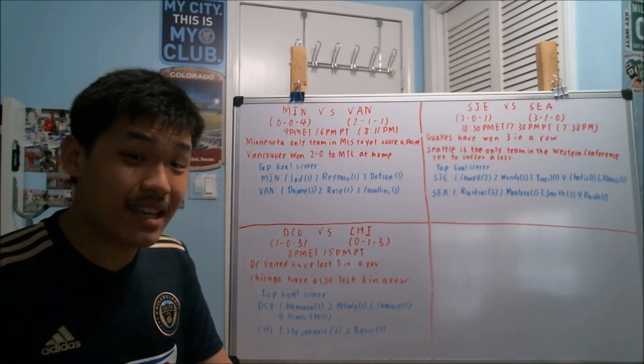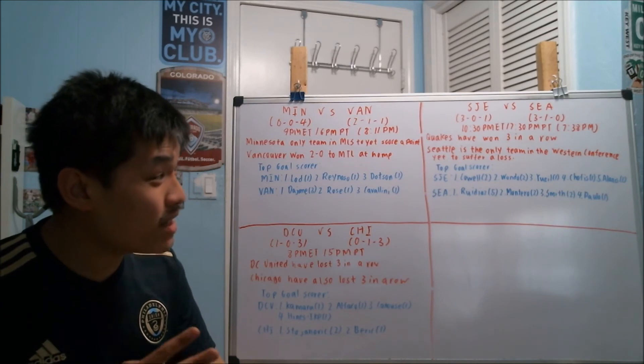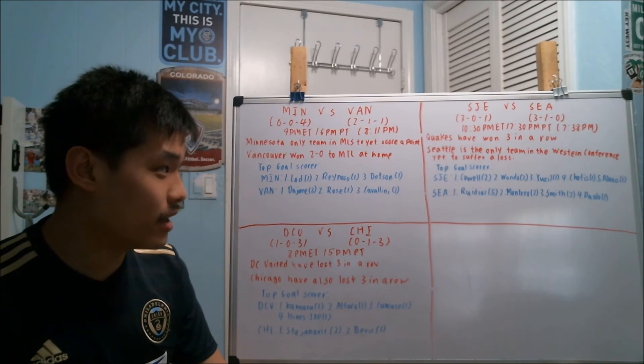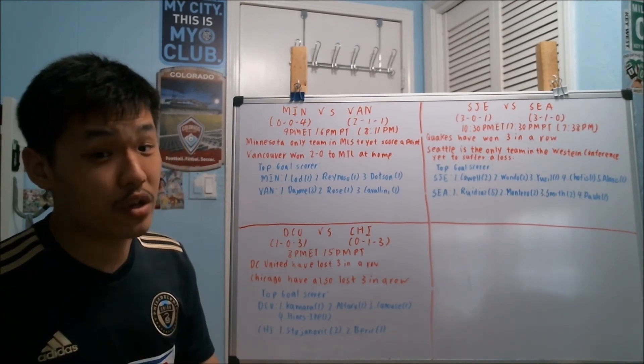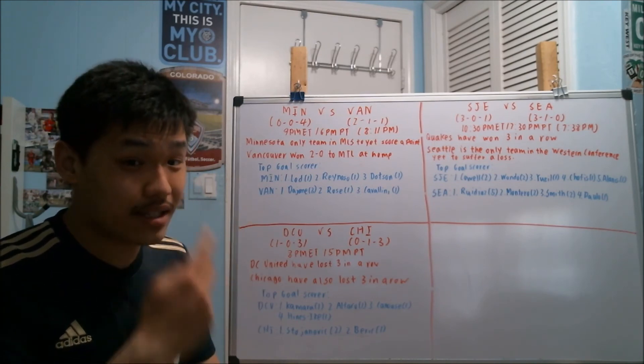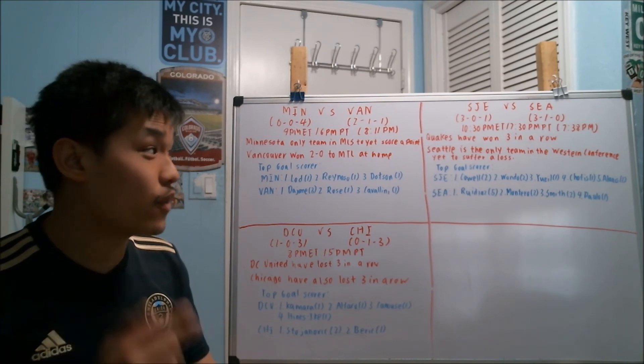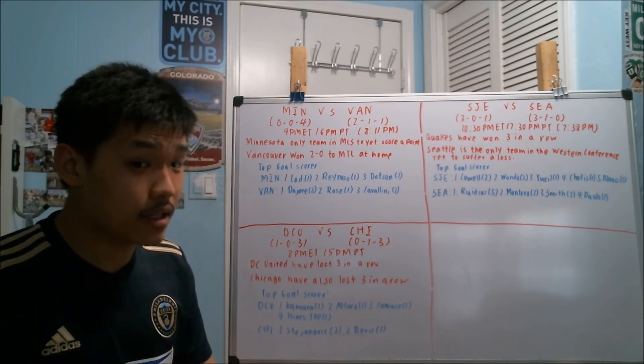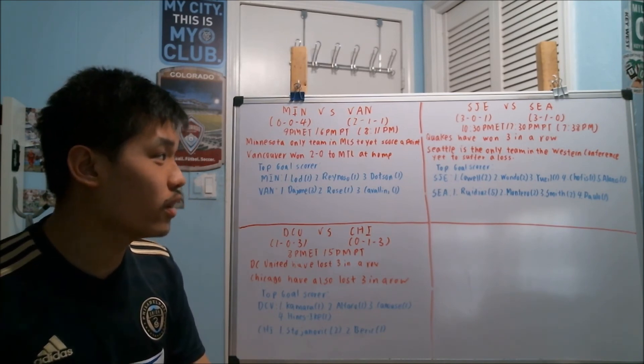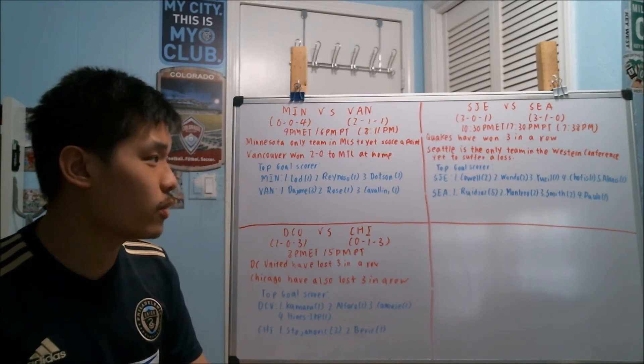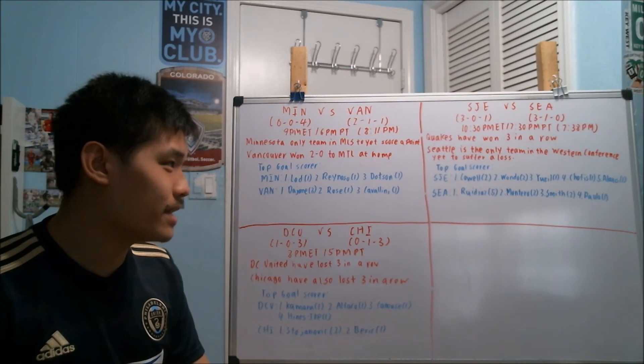It's also going to be interesting to see if Seattle could potentially have a letdown. I talked about how there's been a couple of times when the Sounders play against the Quakes and it seems like this could be a trap game. Knowing they have another big game over the weekend against LAFC, this could be a game they might be having a little bit letdown. The Quakes are the hottest team right now in the league, having won three games in a row to improve their record to 3-0-1, while Seattle is the only team in the Western Conference yet to suffer a loss with a record of 3-1-0.